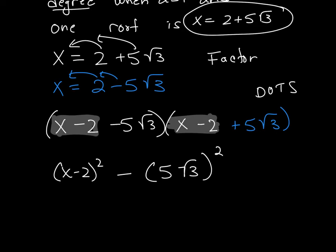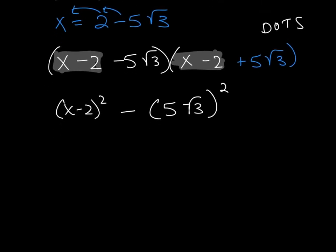I'll go ahead and FOIL the first one out. That becomes x squared minus 4x plus 4 minus... Now, remember when you go ahead and square inside here, the 5 gets squared, which will be 25. And then the square root of 3 squared is multiplying that times 3.